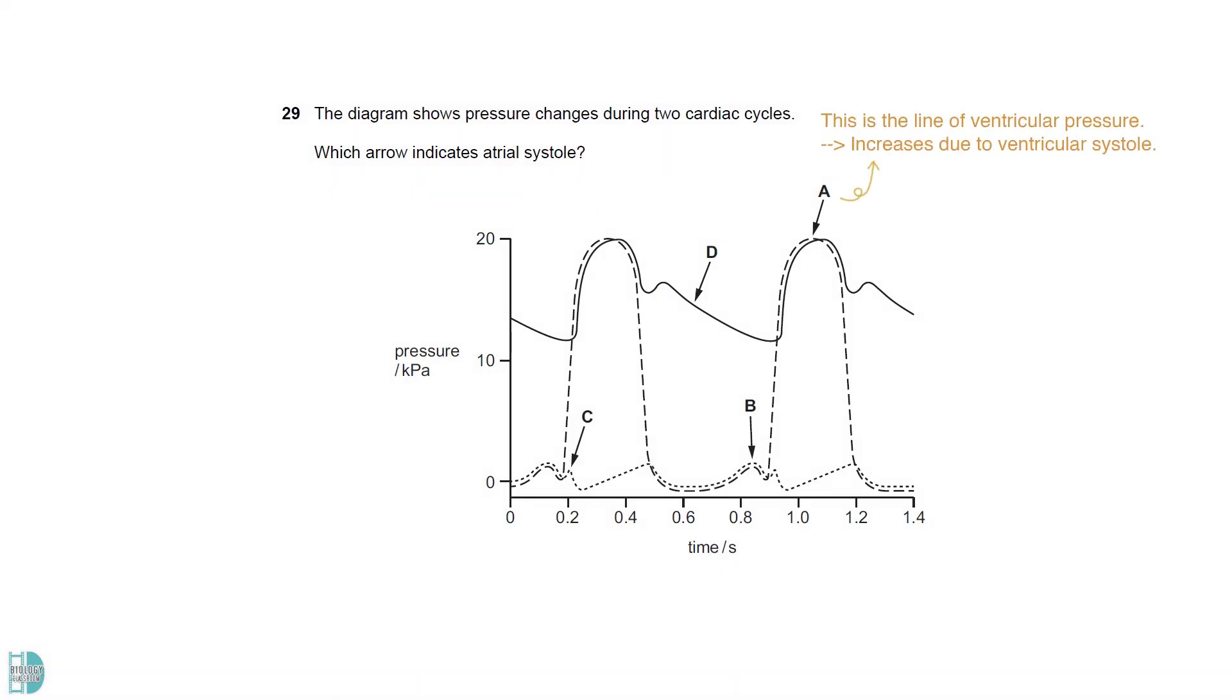A points to the graph of ventricular pressure. The increase is due to ventricular systole. B is the answer. The first increase of atrial pressure in the cycle is due to atrial systole.